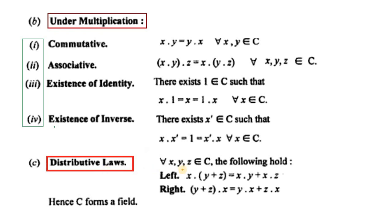For any three elements in set C, the left distributive law holds and similarly the right distributive law holds. Hence C forms a field — یعنی the set of complex numbers C together with addition and multiplication is a field.